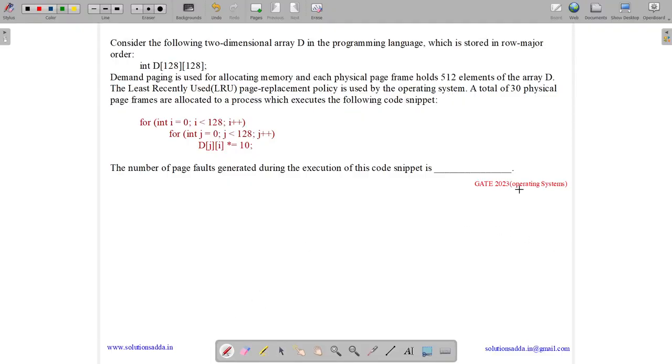This question belongs to Operating System subject and was asked in GATE-CSE 2023. The question states, consider the following two-dimensional array D in the programming language, which is stored in row major order.